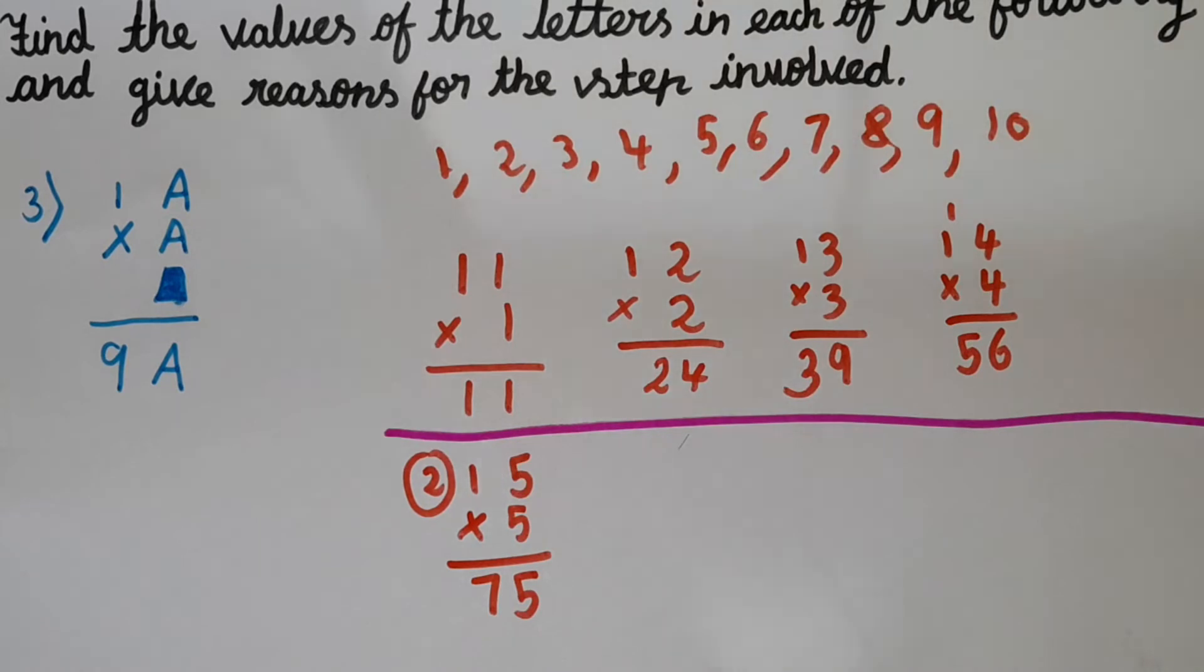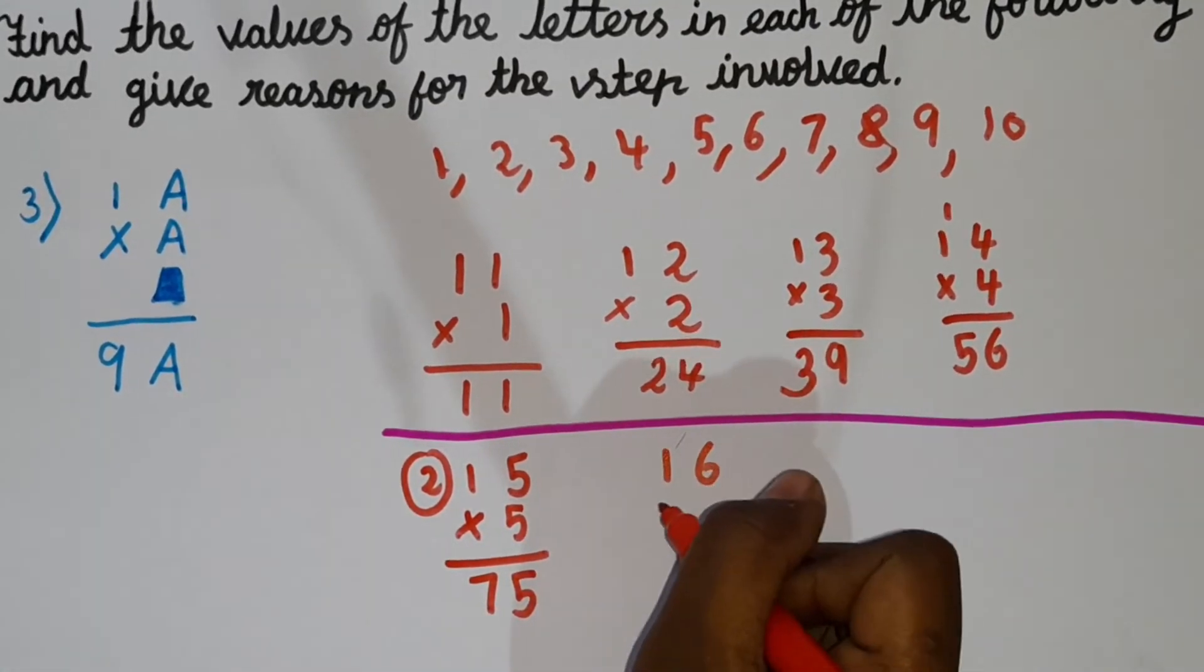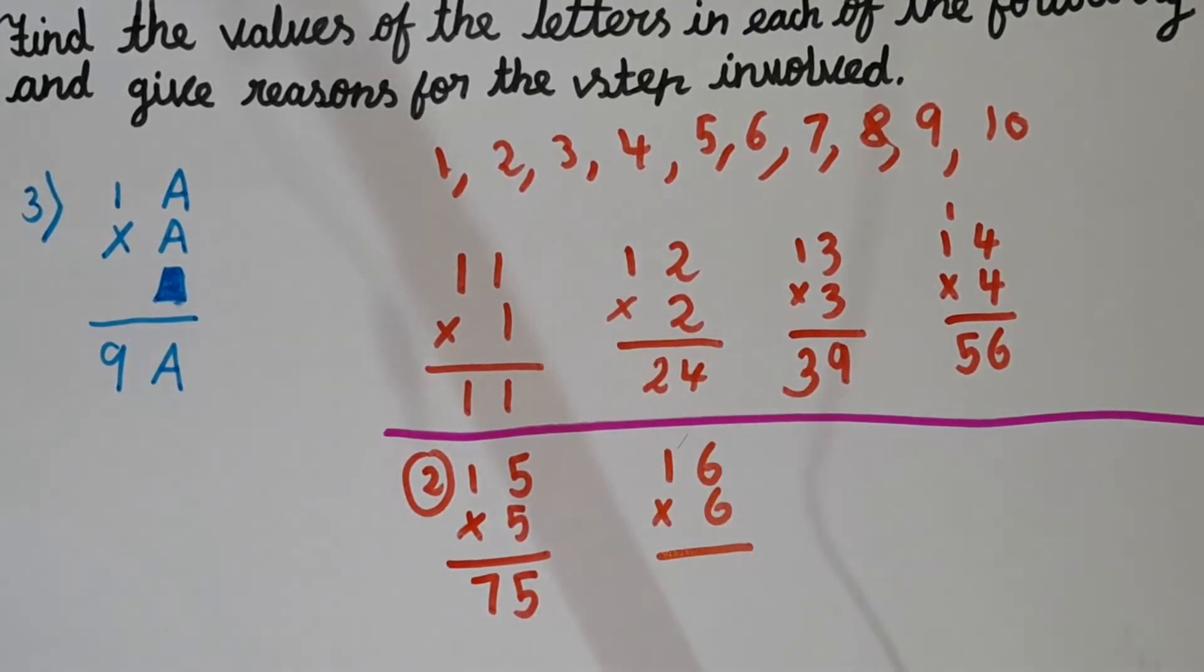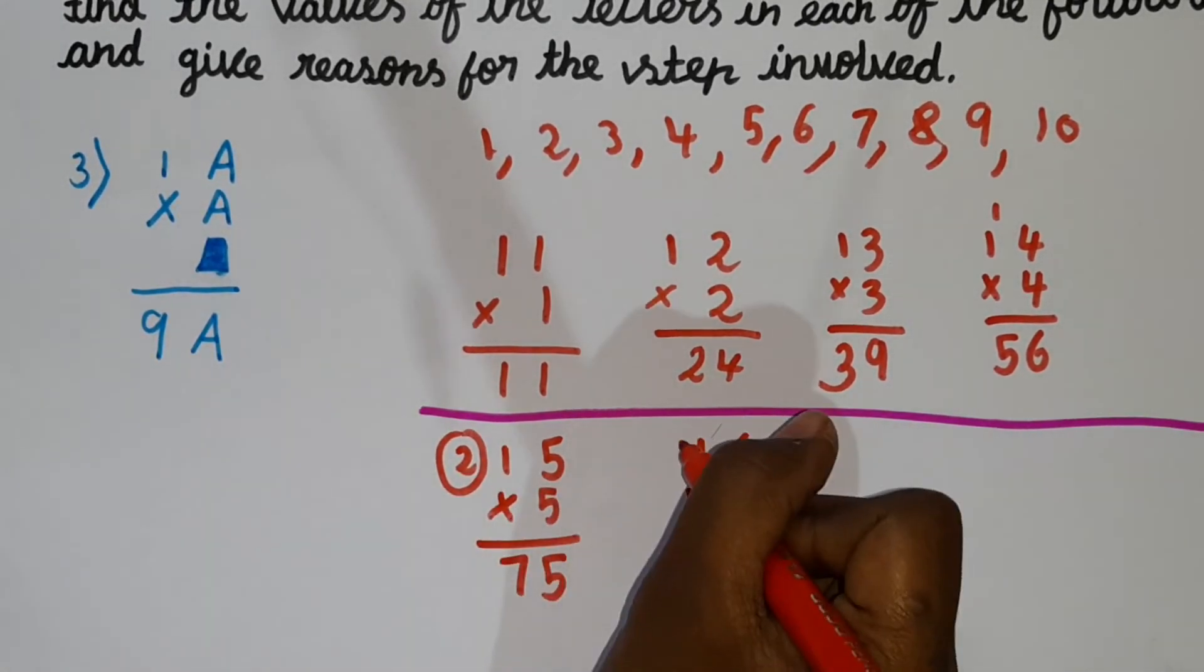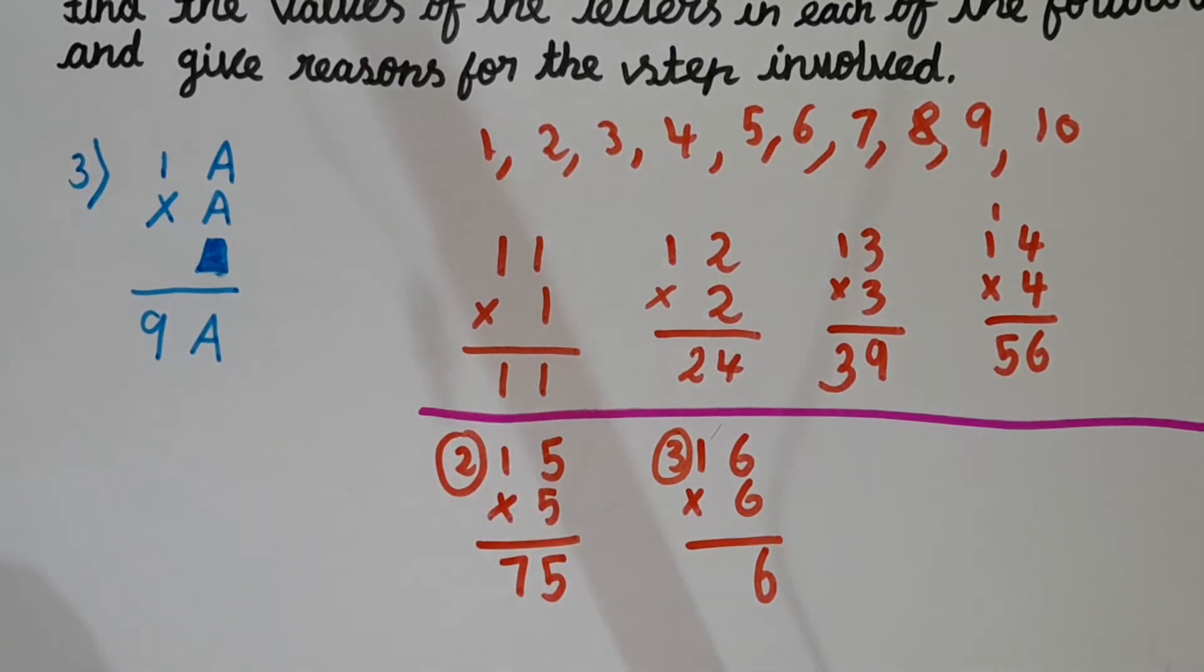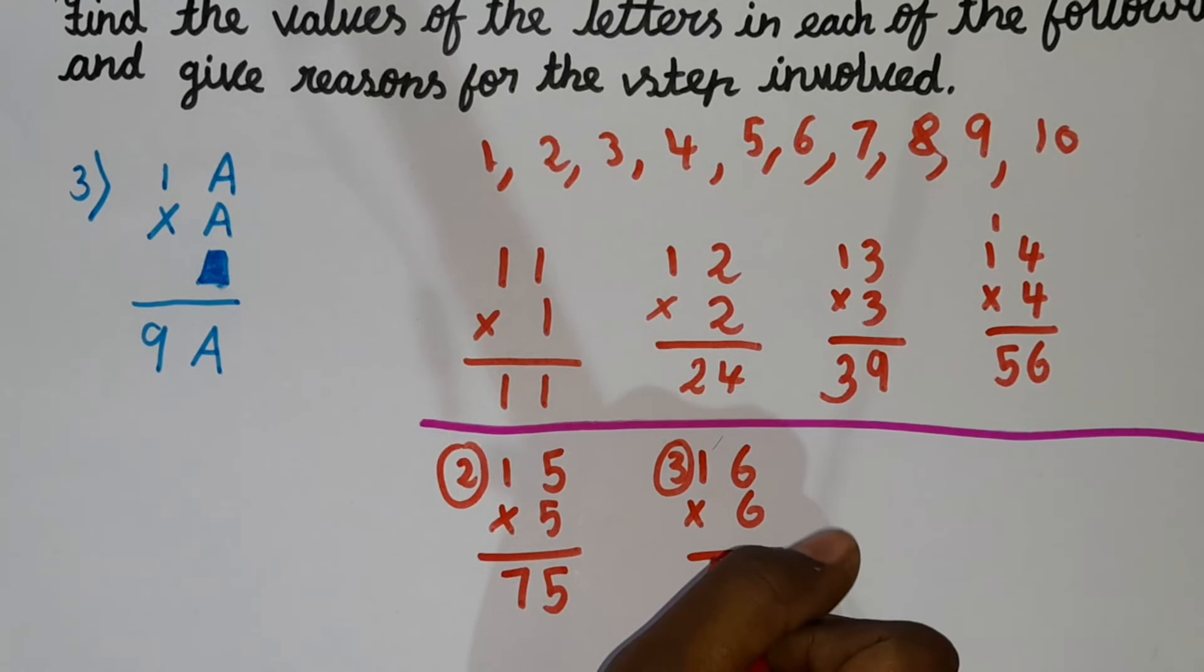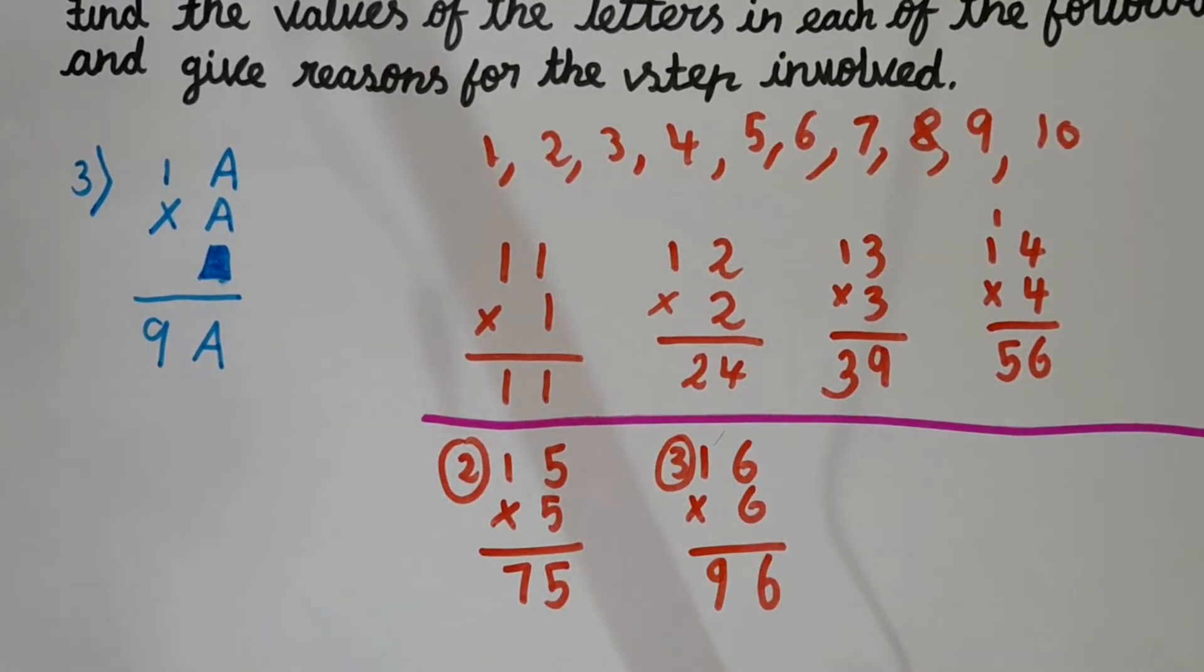Now let's try with 6. 16 into 6. So 6 sixes are 36, 3 carry. 6 ones are 6, 6 plus 3 is 9. So finally we got the answer.